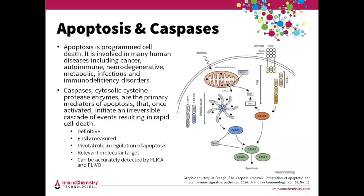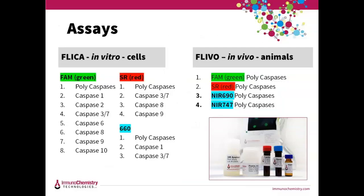They measure caspase activity, which is a hallmark of apoptosis — programmed cell death. It features the activation of initiator caspases that activate effector caspases to cleave cellular substrates. Apoptotic cells demonstrate cytoplasmic and nuclear condensation, DNA damage, formation of apoptotic bodies, maintenance of an intact plasma membrane, and exposure of surface molecules targeting intact cell corpses for phagocytosis. Caspases are a family of cysteine proteases that serve as critical mediators in the apoptotic pathway — they start dismantling the cell from within and are an early and definitive indicator of programmed cell death. Using FLICA and FLIVO to detect caspases means that you only label cells in the process of dying.